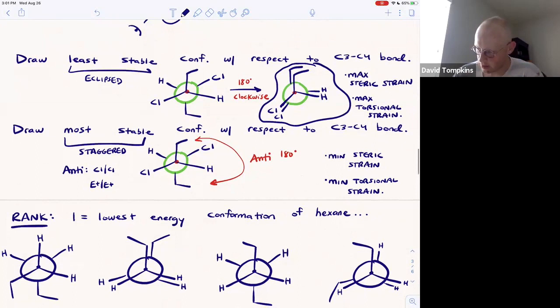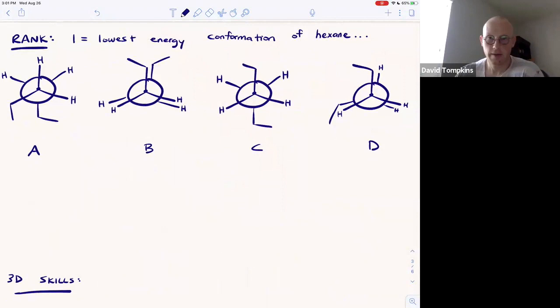Let's look at another example. Here you're given four different conformations of hexane. First, let's name them. A is a staggered conformation. The other staggered conformation is C. Those will be the lower energy two.